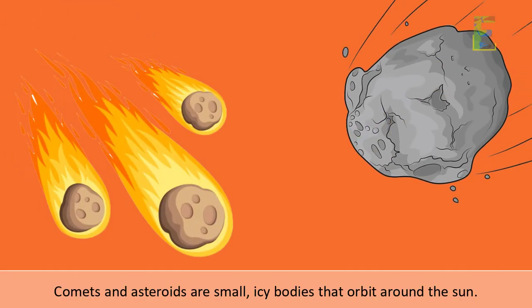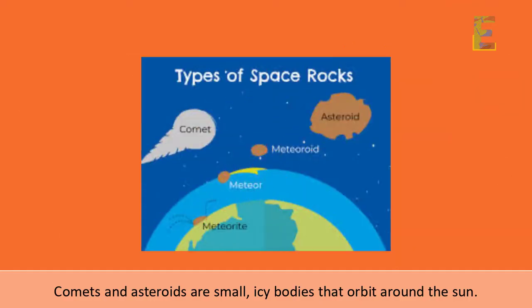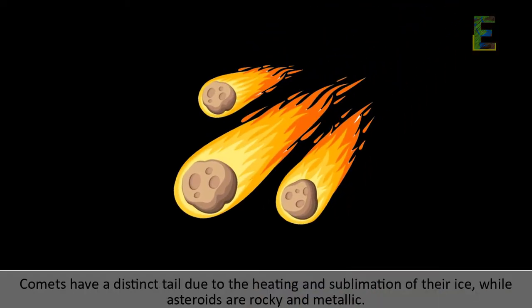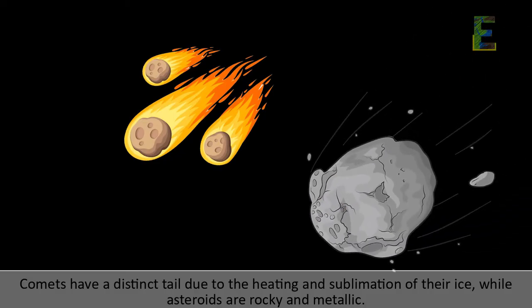Comets and asteroids are small, icy bodies that orbit around the sun. Comets have a distinct tail due to the heating and sublimation of their ice, while asteroids are rocky and metallic.